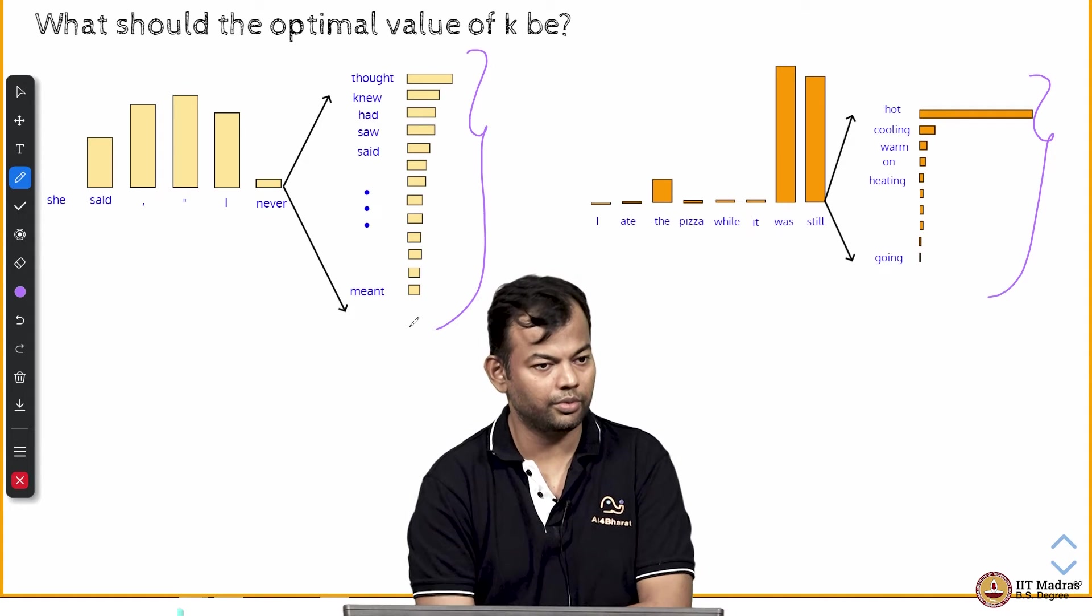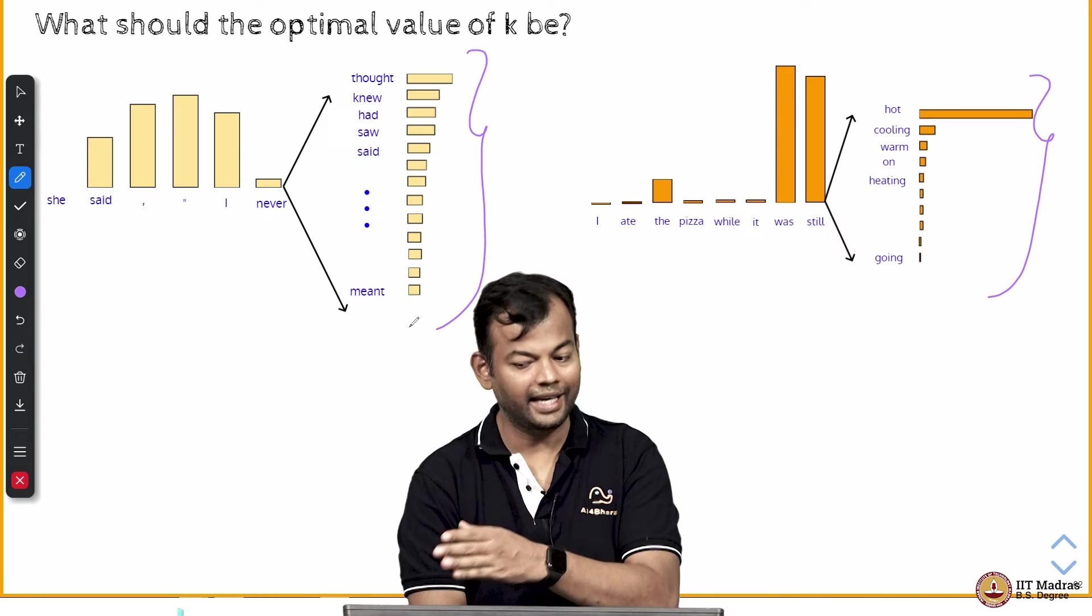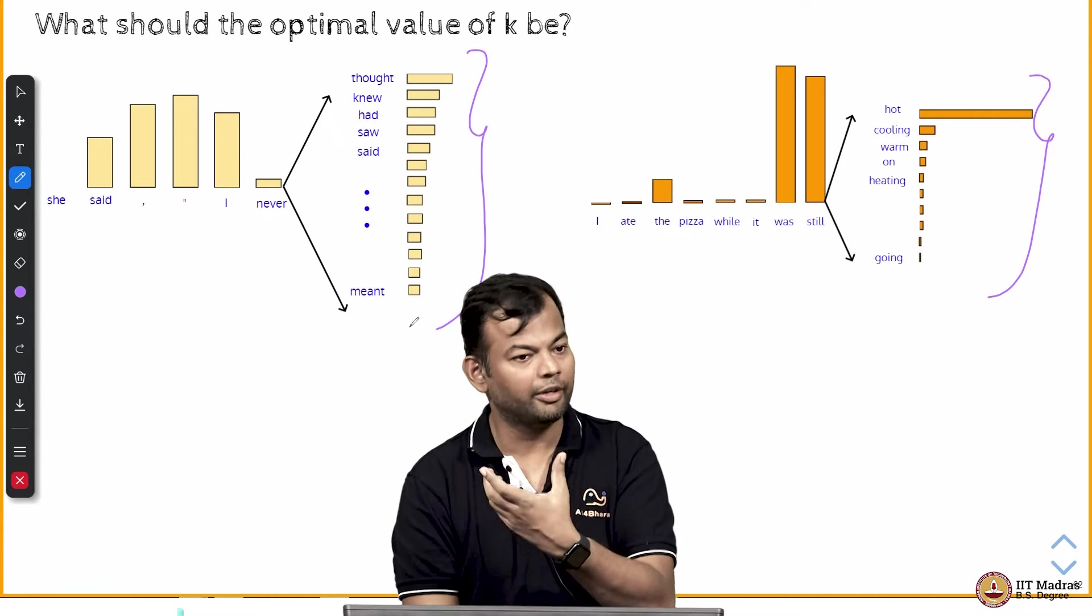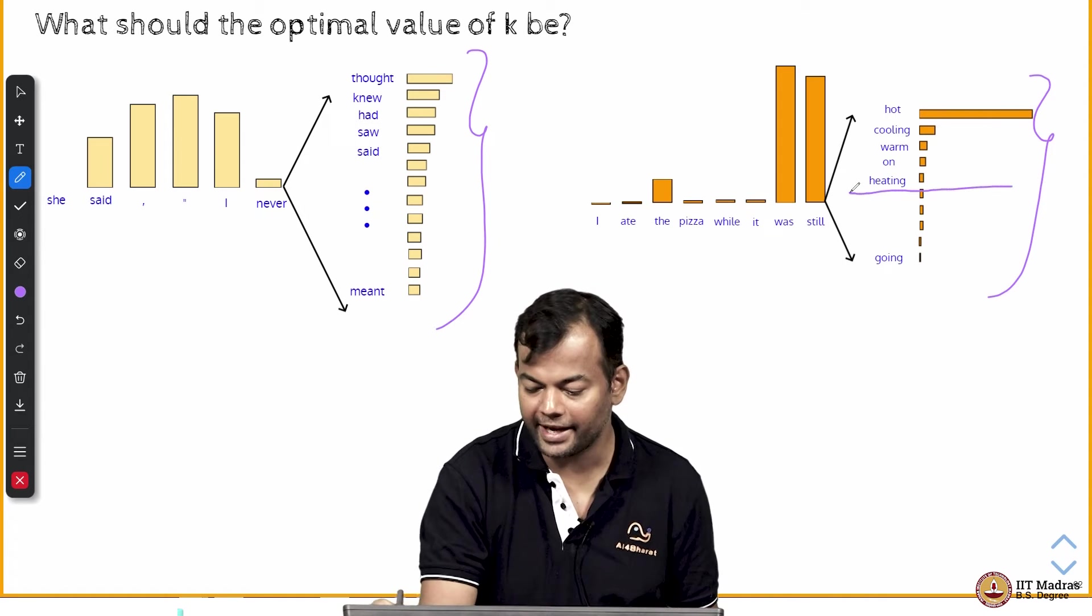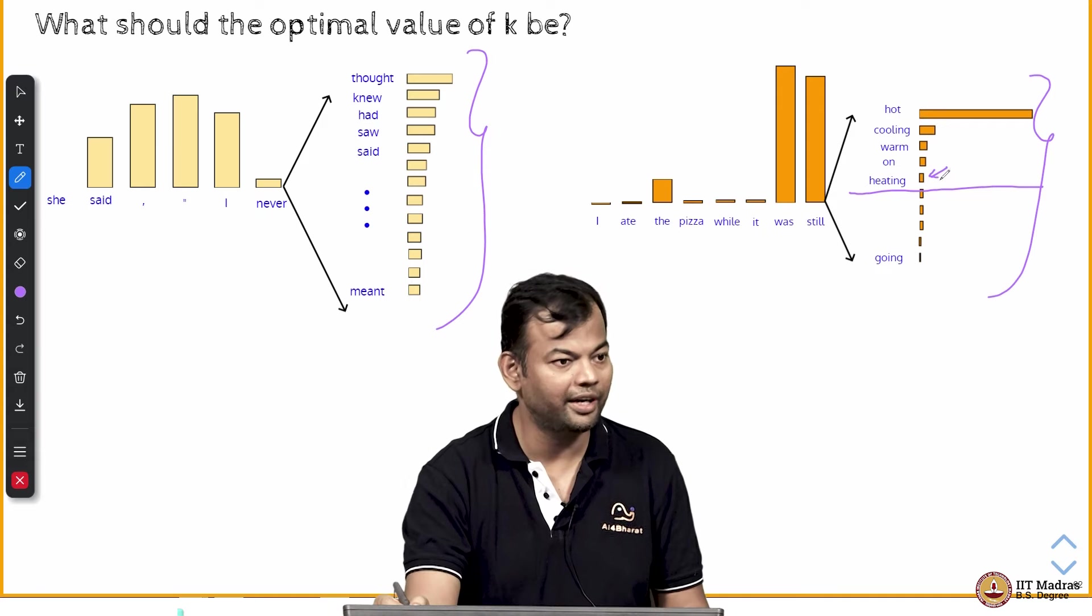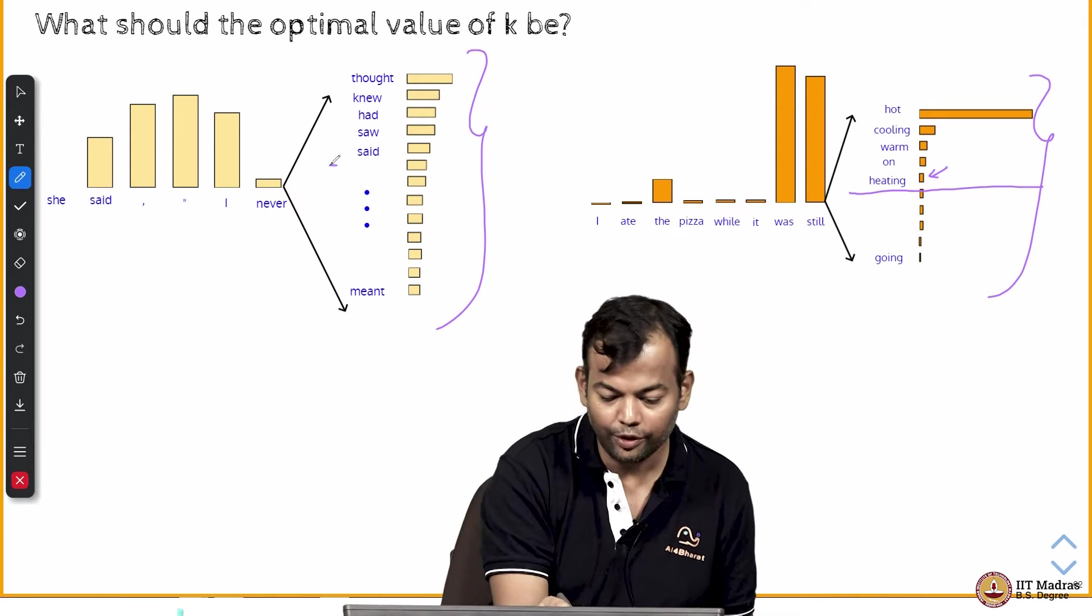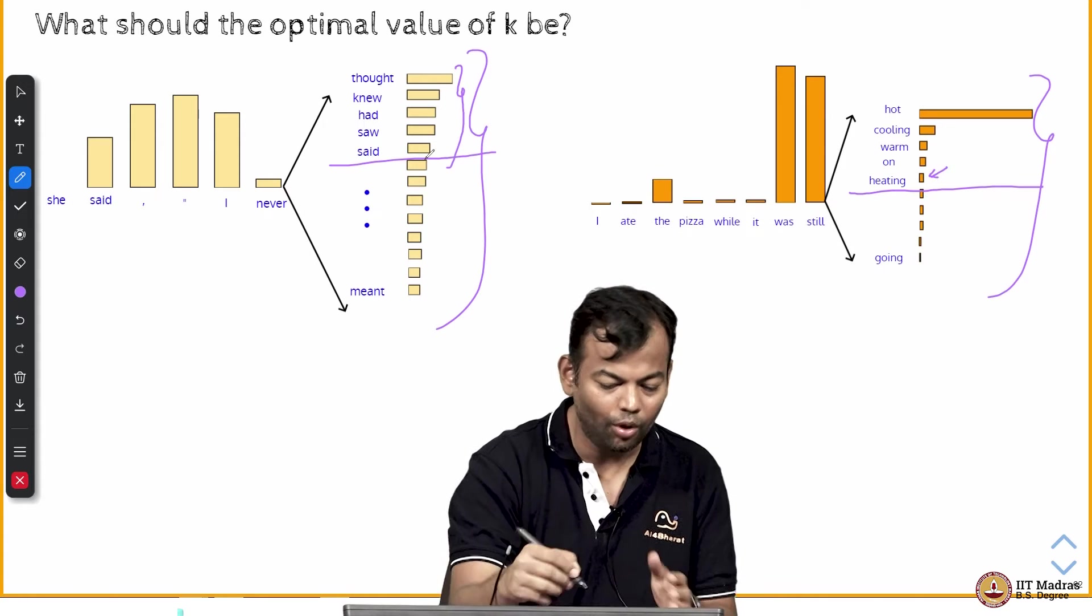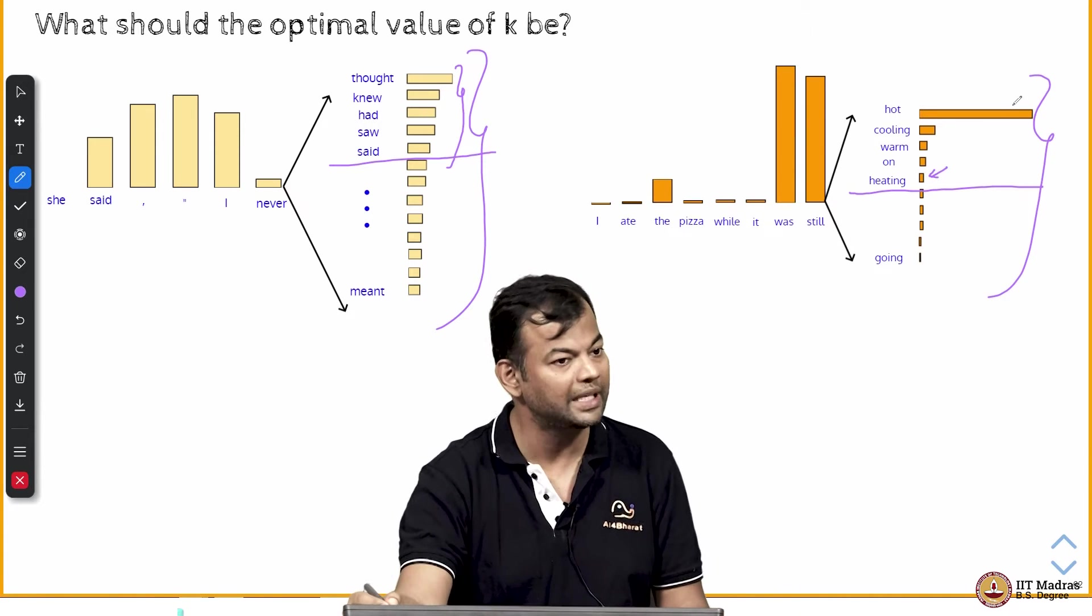You see any difference between these two distributions? Yeah, in the second case it is a very peaky distribution, right? And most of the probability mass is on the word HOT. Now, if you take top-K sampling here, then you have a problem because it is possible that you are going to generate a token which had actually a very low probability. But in this case if you do top-K sampling then it still looks ok because all of these are almost closer to each other, right? It is almost like a flat distribution, this is a very peaky distribution.